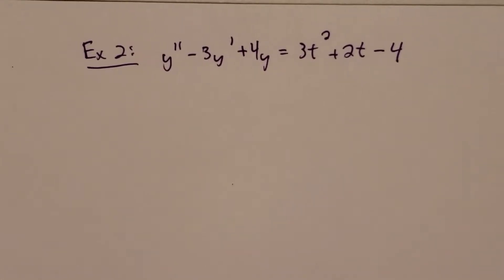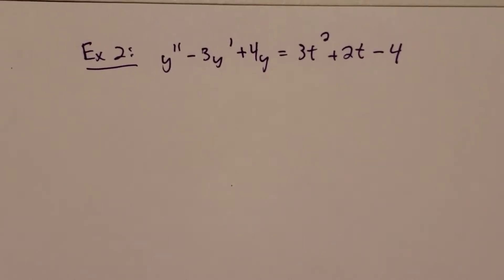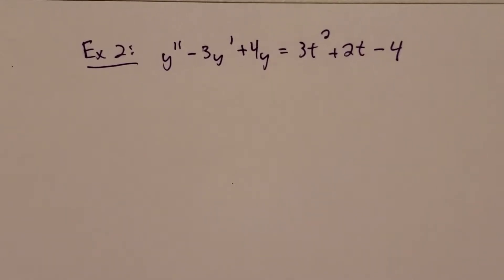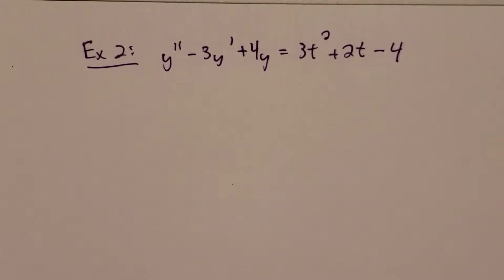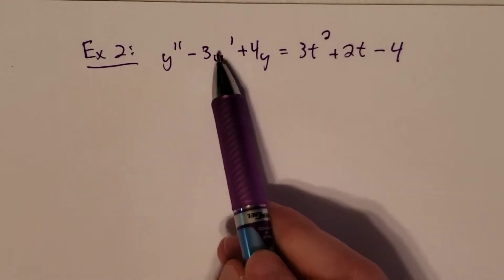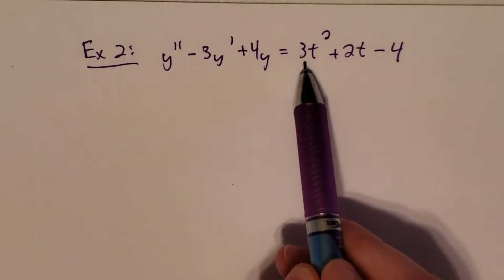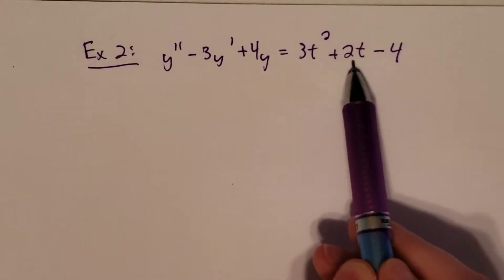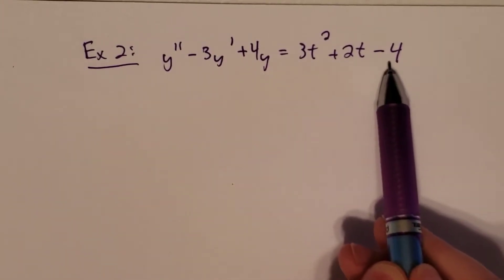All right, here's going to be our second video for section 3.5, and we're going to continue looking at the method of undetermined coefficients. Our second example is y double prime minus 3y prime plus 4y is equal to 3t squared plus 2t minus 4.